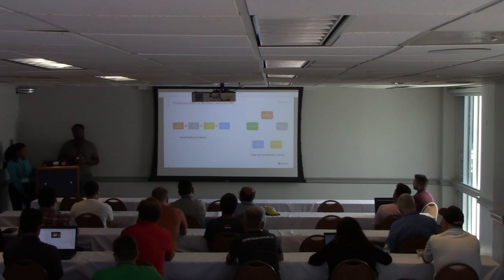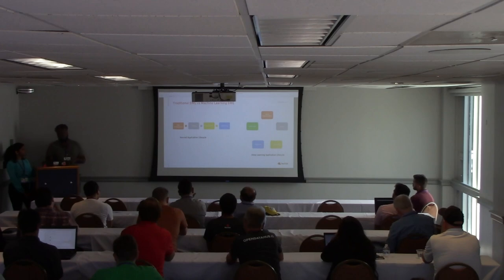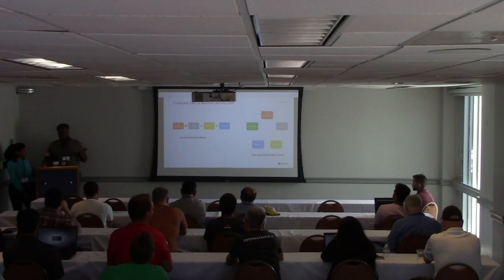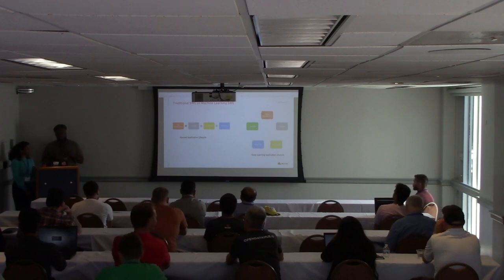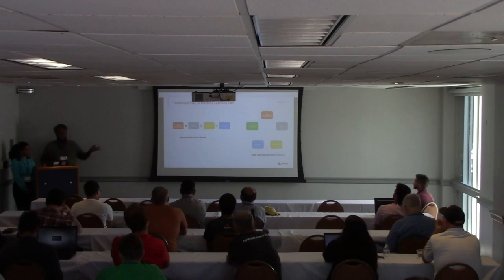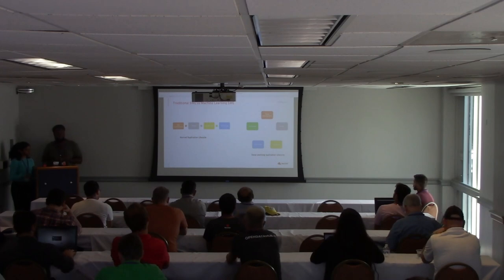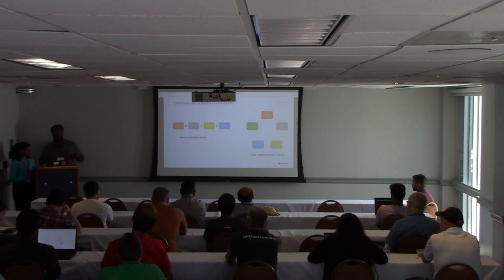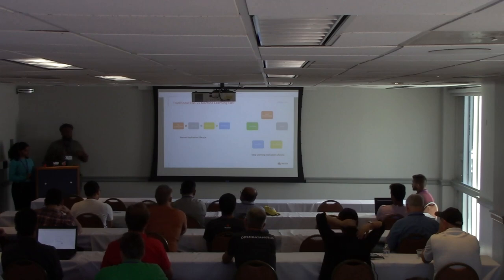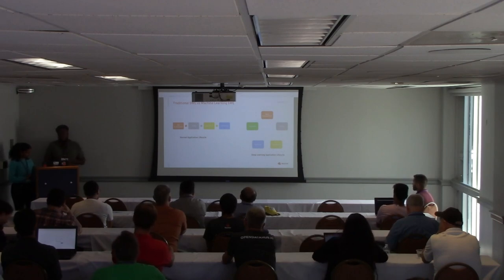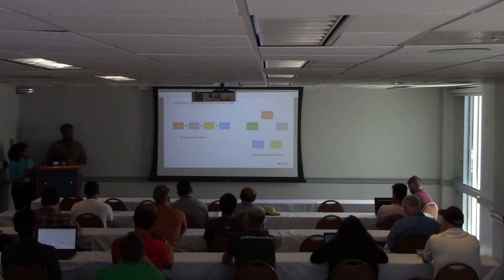Typical software engineering involves writing your code, testing it, deploying it, doing integration testing, CI, and monitoring — pretty simple. But being successful at software engineering and being successful at building machine learning systems have different goals. In software engineering, your goal is to meet a functional specification; in machine learning, your goal is to optimize a metric like prediction accuracy. Quality in ML is measured by code, data, and tuning, and you'll need regularly updated data to continuously train your model.